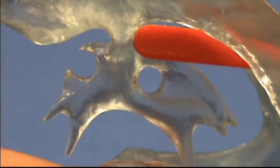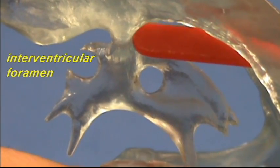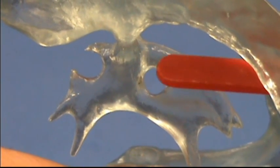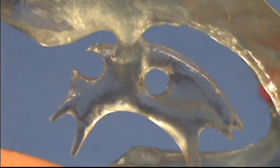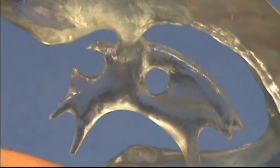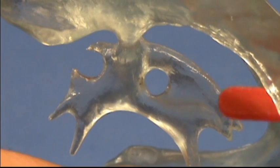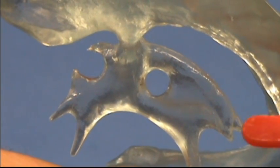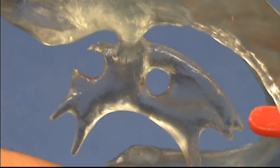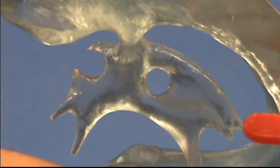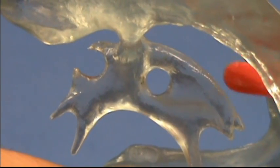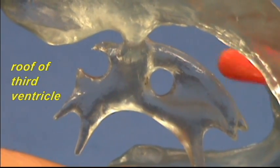Right over here is where you have the interventricular foramen, and there's another one on the other side. This opening right over here is where you would have the interthalamic adhesion, which is the bridge between the two thalami. Notice that the shape of this chamber conforms to the structures that are surrounding it. Right over here, you would have the pineal gland. You would have the choroid plexus in the roof of the third ventricle located right over here.